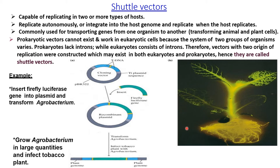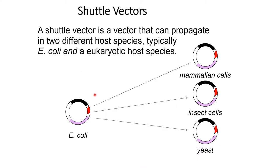The glowing tobacco was produced by inserting the luciferase gene into a plasmid and transforming it into a bacterium. This plasmid was then amplified in Agrobacterium in large quantity, and it was transformed to infect the tobacco plant, which led to the glowing tobacco.